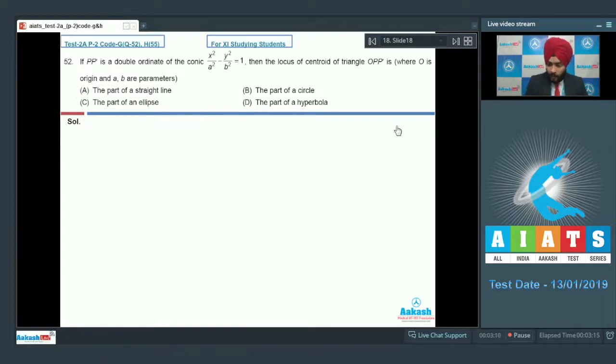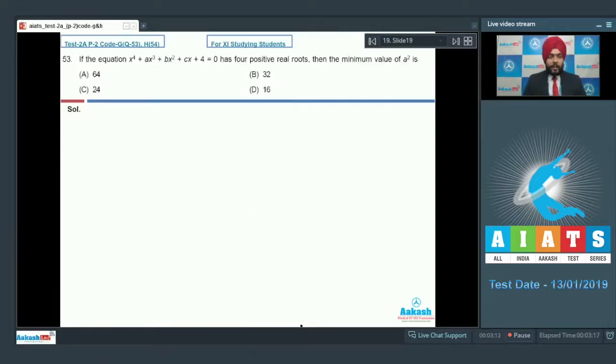Let us move on to 53. Question number 53 says that if the equation x to the 4 plus A x cube plus B x square plus C x plus 4 equals 0 has 4 positive roots, what is the minimum value of A square? We know that if the roots are positive, we can apply AM-GM inequality between the roots.